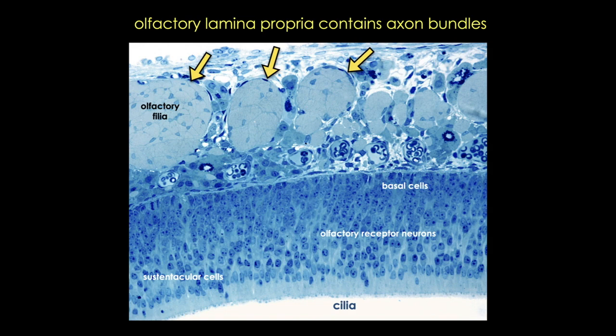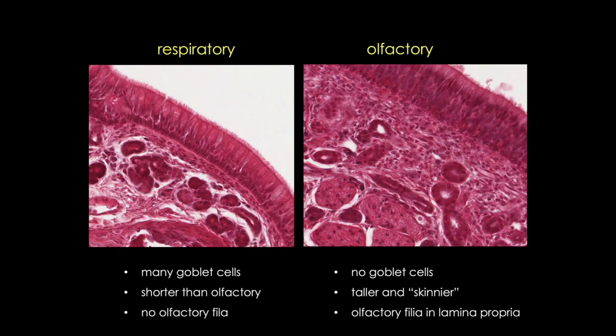Now let's review the differences. In these two images, I hope that you can now appreciate the many goblet cells of the respiratory epithelium, the taller appearance of the olfactory epithelium. And remember to look for those axon bundles or filia in the lamina propria of olfactory mucosa. I hope that these tips will help you solve this case of mistaken identity. Thanks for stopping by.